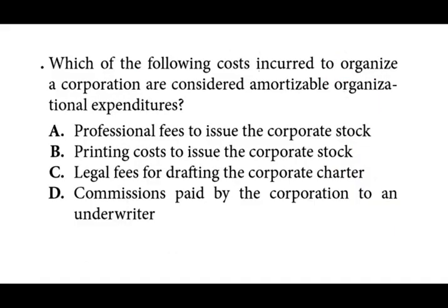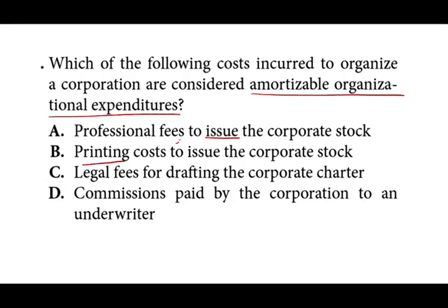Which of the following costs incurred to organize a corporation are considered amortizable organizational expenditures? Organizational expenditures are legal and professional fees to incorporate your business. 'Professional fees to issue corporate stock' — no, that is not an organizational expense. 'Printing costs to issue corporate stock' — also no; if A is wrong, B is wrong for the same reason. 'Legal fees for drafting the corporate charter' — yes, that is a legal fee to incorporate, so C is the correct answer. 'Commissions paid to an underwriter' — no, the rule is legal and professional fees to incorporate, not to issue stock.